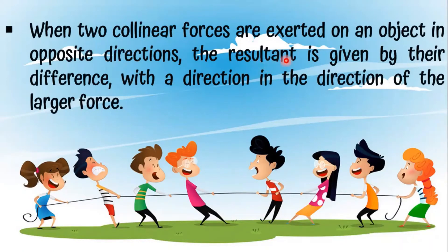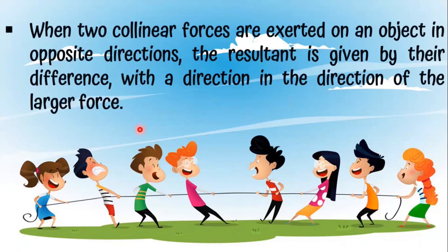Conclusion: when two collinear forces are exerted on an object in opposite directions, the resultant is given by the difference of the two forces, acting in the direction of the larger force. For example, we write the answer as 20 Newtons to the west — taking the larger force and its direction.